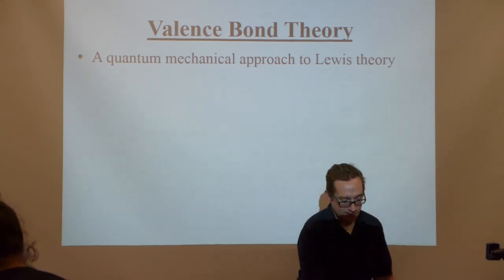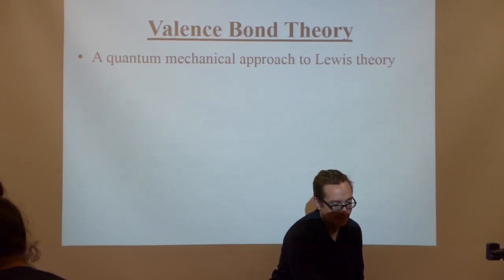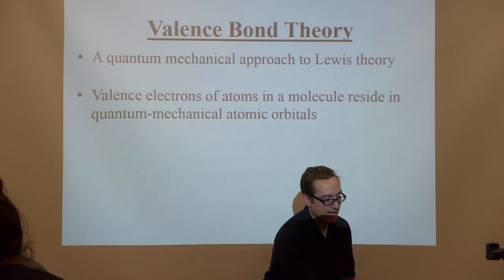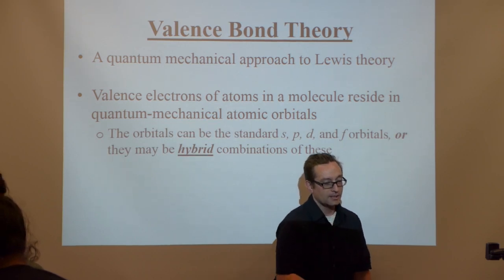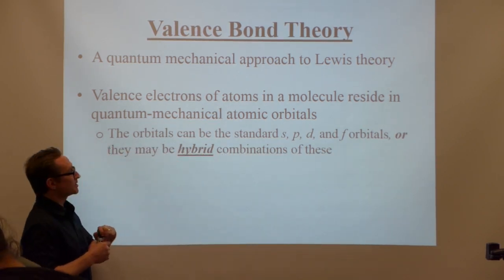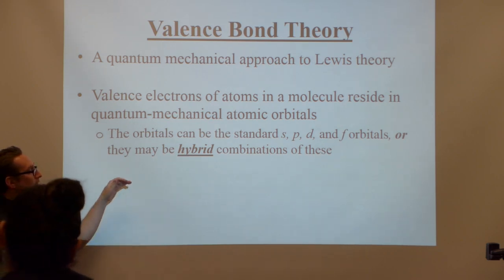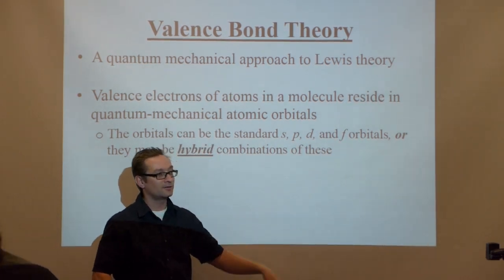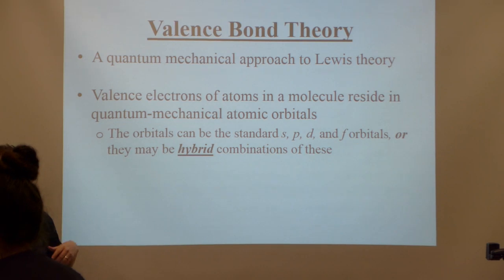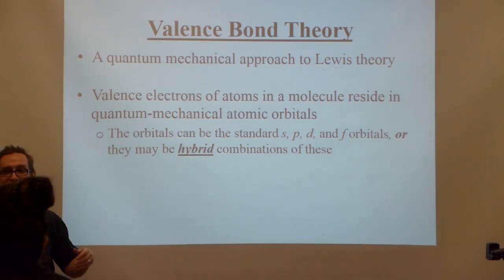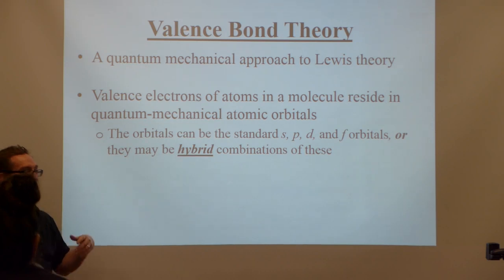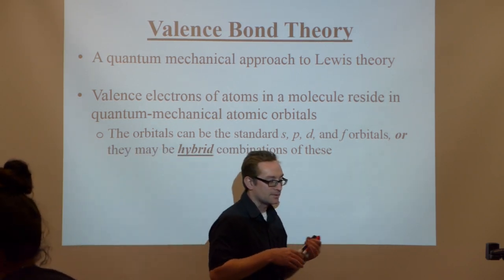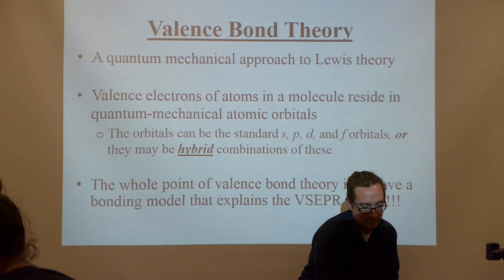This applies to what we call a quantum mechanical approach to Lewis theory. The valence electrons of the atom reside in quantum mechanical atomic orbitals. However, the orbitals can be the standard s, p, d, or f, or they may be hybrids — combinations of these. When you think of the word hybrid, you think of a hybrid vehicle — both electric and gas — or hybrid organisms that are a mixture of two things.